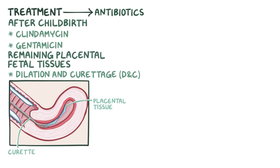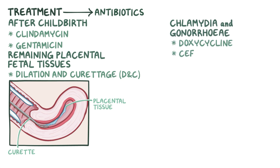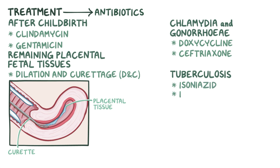For endometritis caused by Chlamydia trachomatis or Neisseria gonorrhoeae, a combination of doxycycline and ceftriaxone is used to treat the infection. Finally, if endometritis is caused by tuberculosis, the treatment will include the use of anti-tuberculosis drugs like isoniazid, rifampin, pyrazinamide, and ethambutol.